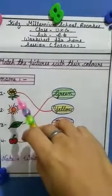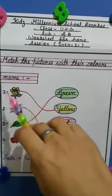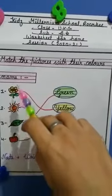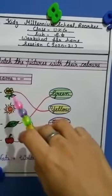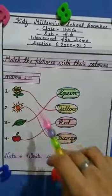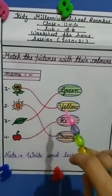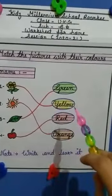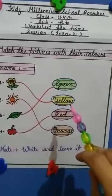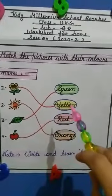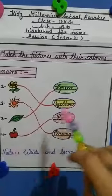Number one, first pick is flower. The flower here is yellow color. So you will match it with its color name Y-E-L-L-O-W yellow. Yellow means pila.